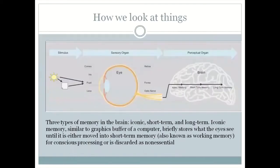The first thing we need to understand is how we look at things. In the human brain there are three kinds of memory: iconic, short-term, and long-term. The iconic is basically there for the wow effect — it is there to catch a glimpse of anything that is out of the ordinary. In terms of a communication product, this is where the headline or the report's name comes in.